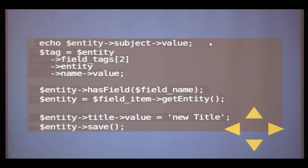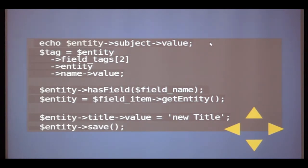We also have an API to access all field values, which works based on objects and magic. When you do entity->subject->value it gives you the value of a subject field. The API also supports chaining. For example, entity->field_tags[1]->entity gets you the full loaded entity object of the first tag, and from there you can continue to drill down with the entity API, all in a single line.